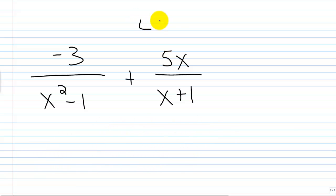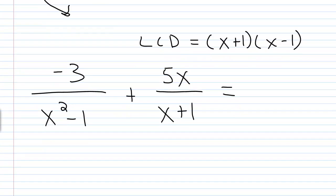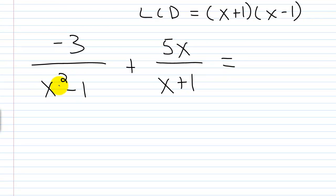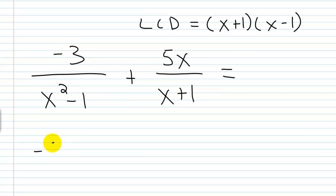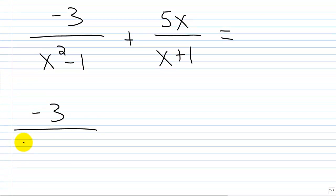I'm just going to write this up here, LCD x plus 1 times x minus 1. I always like to write my LCD in factored form. So if I just put this like this, I'm not going to do anything with this first rational expression because I don't need to, right? It's got the LCD as its denominator already. So I'll have negative 3 over, I'll just write it as x plus 1 times x minus 1.